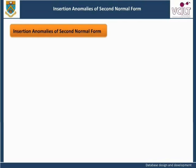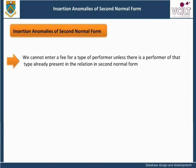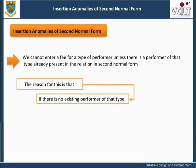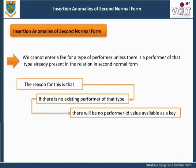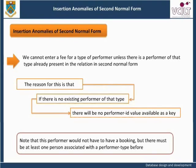Insertion Anomalies of Second Normal Form: We cannot enter a fee for a type of performer unless there is a performer of that type already present in the relation. The reason is that if there is no existing performer of that type, there will be no performer ID value available as a key. If we want to add that acrobats are paid 65, we cannot do so unless we enter complete details for a specific individual. Note that there must be at least one person associated with a performer type.